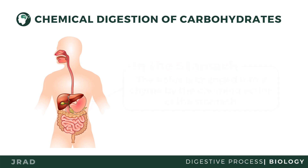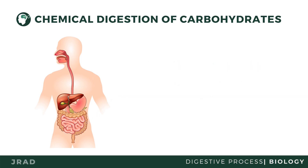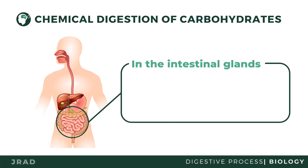In the small intestine, amylopsin repeats the work of ptyalin to ensure that all carbohydrate molecules are changed into disaccharides. Lastly, the intestinal glands will release the final enzymes for digestion of carbohydrates. For instance, maltase will change maltose to glucose and glucose. Maltose is usually found in starchy foods.